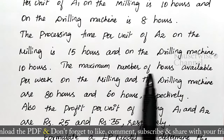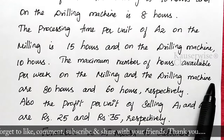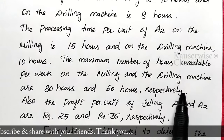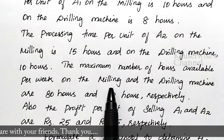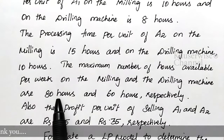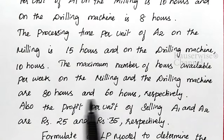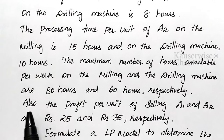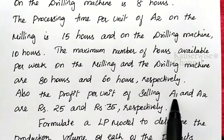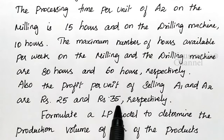The maximum number of hours available per week on the milling and drilling machines are 80 hours and 60 hours respectively. So per week, the milling machine can be used for 80 hours and the drilling machine for 60 hours — this is the constraint, the limitation.